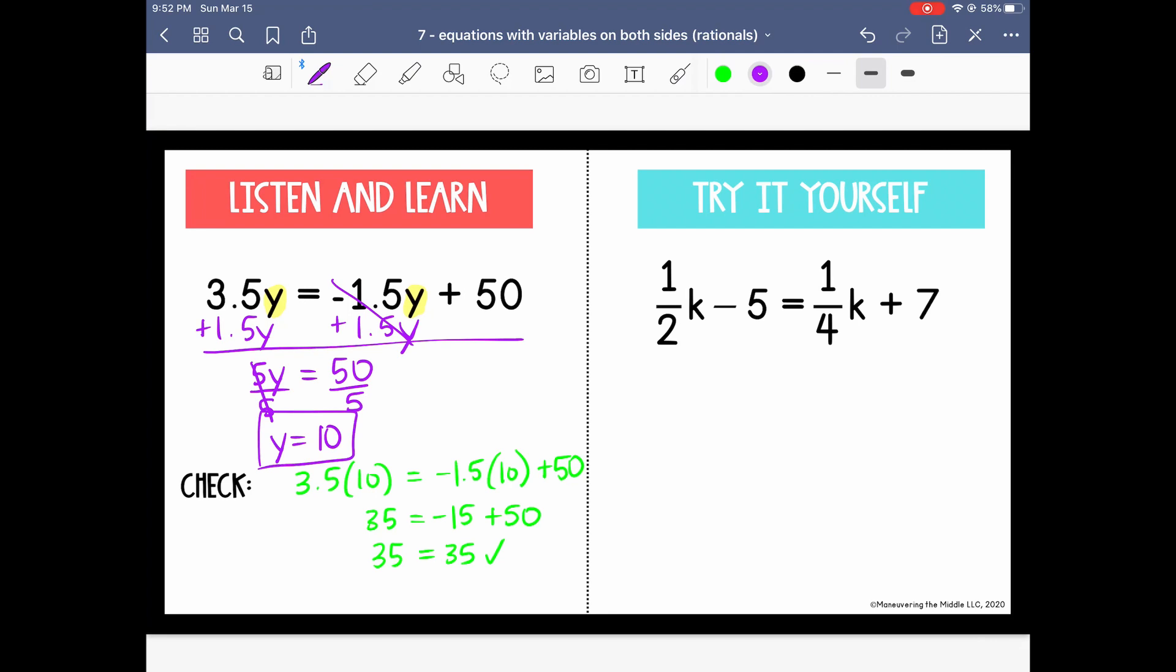So pause the video and try the example on the right. Here, when I want to decide which side to collect my variables, I know that 1/2 k is larger than 1/4 k. And right next to it, I'm just going to write that 1/2 is actually 2/4. I'm going to rewrite it, giving it a common denominator with the fraction on the right. So now, to collect my variables on the left, I'm going to remove or subtract 1/4 k from both sides. So I want to cancel out this whole term from the right. So on the left, 2/4 k minus 1/4 k is just 1/4 k minus 5 equals 7.